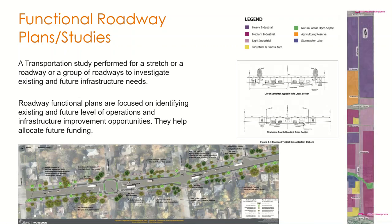Roadway functional plans are a very similar scope of study to area structural plans and transportation master plans, however the scope mainly covers a roadway segment. These plans focus on identifying existing and future levels of operation — the needs for that roadway to function satisfactorily, efficiently, and safely in the future. They help allocate future funding and look into the cost of implementing recommended improvements. An Ottawa example and an Edmonton example are shown on screen.